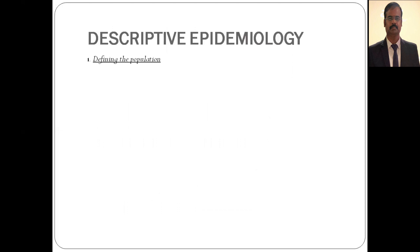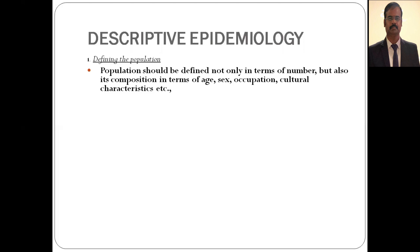The step-by-step process of descriptive study design begins with defining the population. You have to be very careful in defining the population — not only in terms of number, but also in terms of the composition: age, gender, occupation, geographical area, and cultural characteristics. Everything must be decided before you start the study.